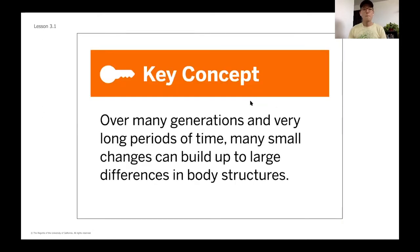A key concept to always keep in mind: these changes happen over a very long period of time — millions and millions of years. They're not big changes; they're small things that add up to create different species. Even little differences can all accumulate over millions and millions of years to make large differences.